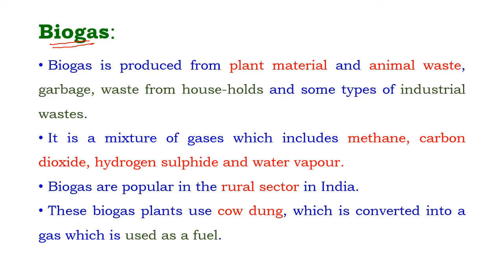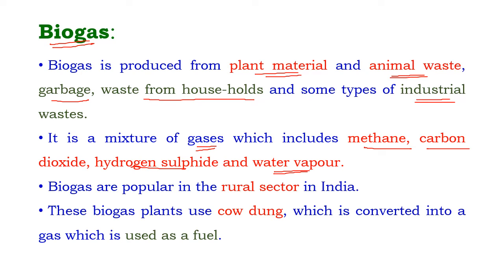Biogas is produced from plant material and animal waste, garbage, waste from households, and some types of industrial wastes. Biogas is a mixture of gases which includes methane, carbon dioxide, hydrogen sulfide, and water vapor. Biogas is popular in the rural sectors of India, where biogas plants use cow dung which is converted into gas and used as fuel.